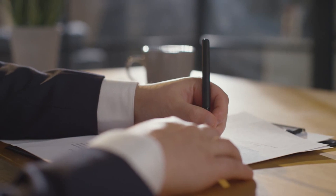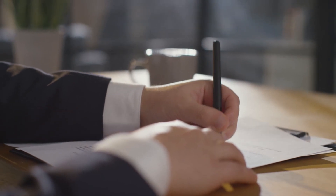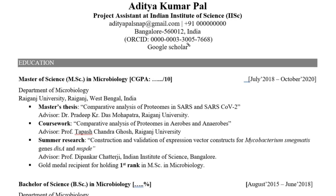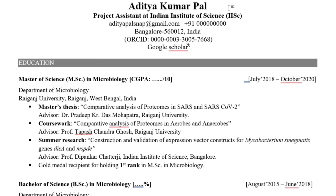This CV is from last year when I was applying for PhD positions, so many things have changed now, but I wanted to show the one I actually applied with. The first thing is to mention your name in bold — you can also increase the font size a little. Here I have used 18pt font size in Times New Roman.